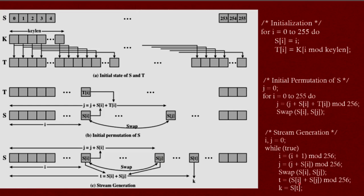The key stream byte K is returned as S[t], where t is the computed position. For encryption, a binary XOR operation is applied between one byte from the plain text and this key stream K. For decryption, the same XOR operation is applied between the key stream K and one byte from the cipher text, returning the plain text. This is the working of the RC4 algorithm.